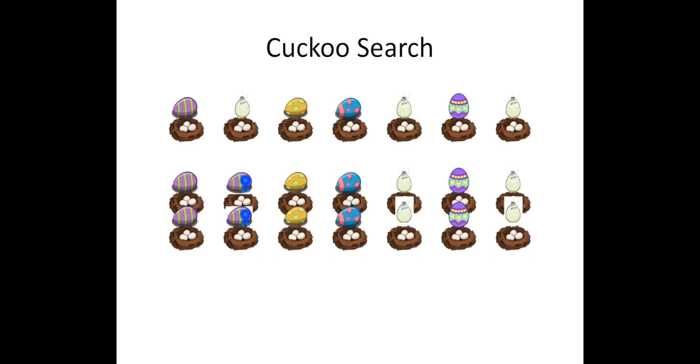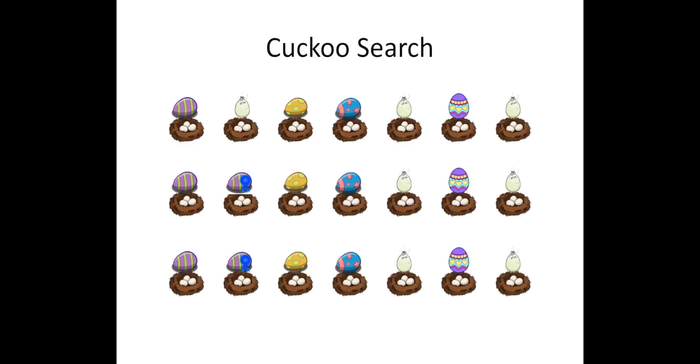Next, a percentage of the worst fitness solutions are replaced by randomly generated solutions. These two mechanisms allow the solutions to search locally and globally at the same time for the optimal solution.